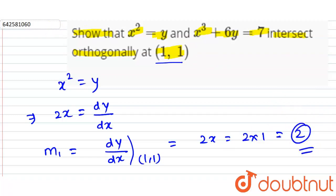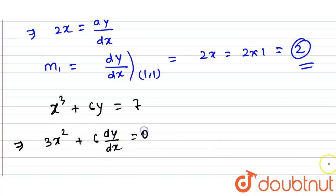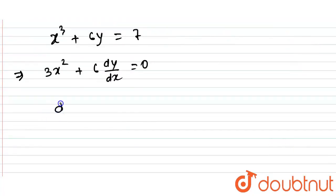Now, what is the other equation? We have x cubed plus 6y equals 7. We have to differentiate this with respect to x. This is 3x squared plus 6 dy by dx equals 0. Or we can write dy by dx equals minus 3x squared upon 6. Cancel out by 2. This is minus x squared by 2.